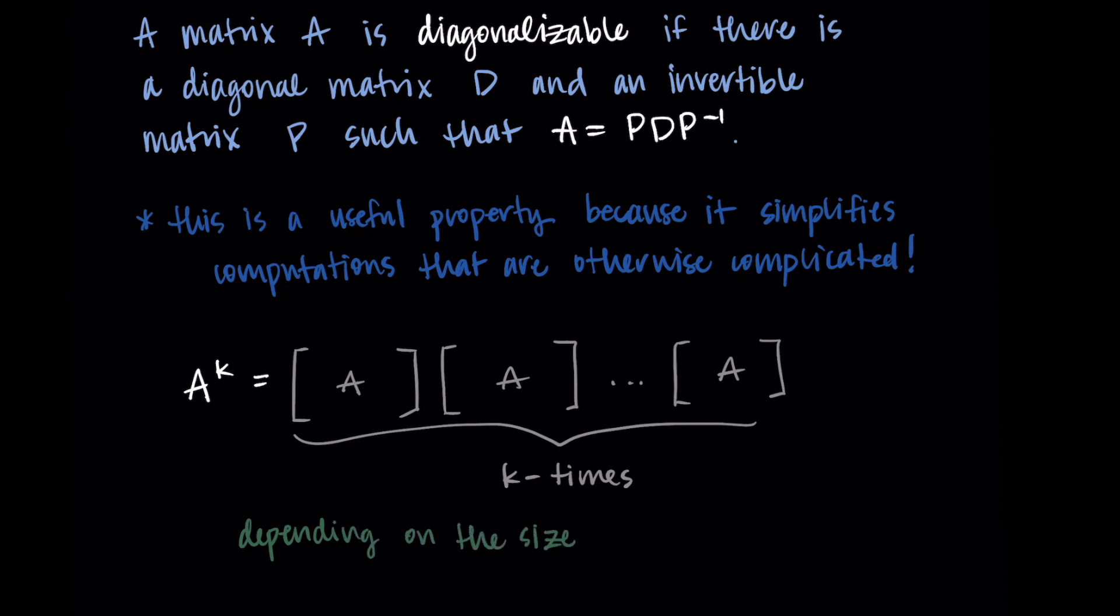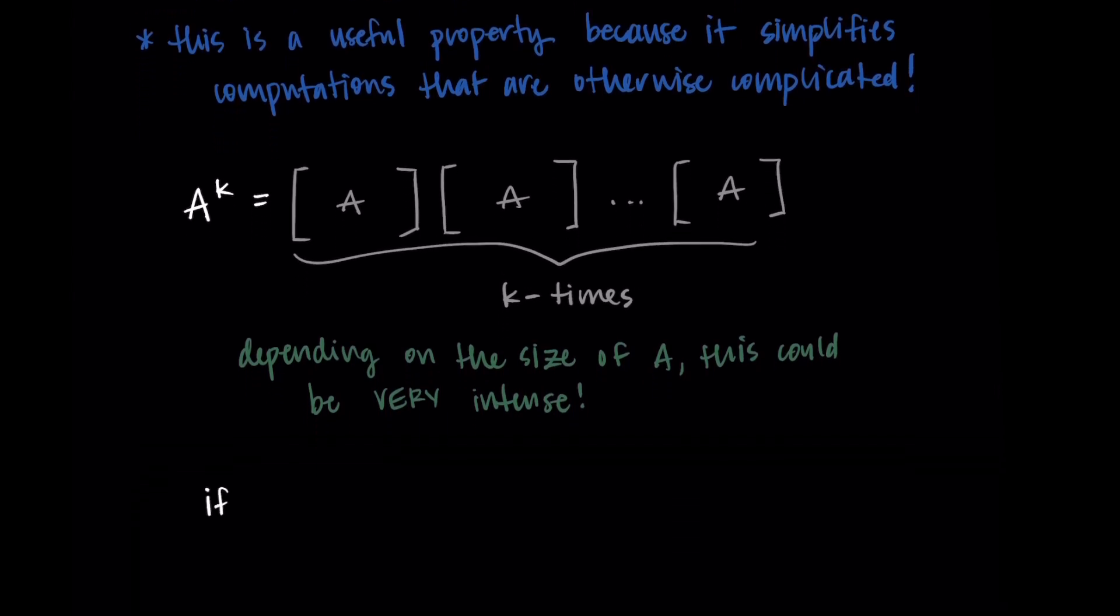Depending on the size of A and how much data we have in A, this could be really intense as a computation. We need to take A and multiply it by itself k times. This is lots of multiplications to do over and over again. But this is where diagonalization comes in handy. If we can write A as PDP inverse, then this computation becomes much simpler.